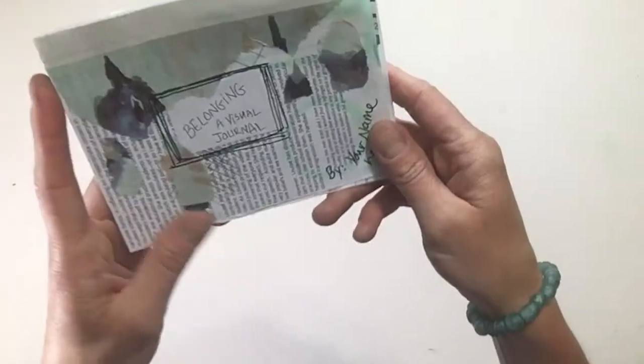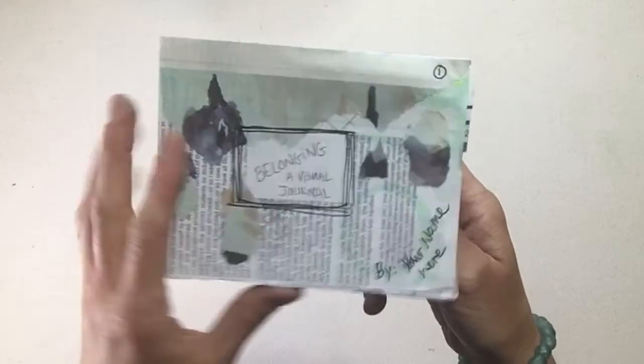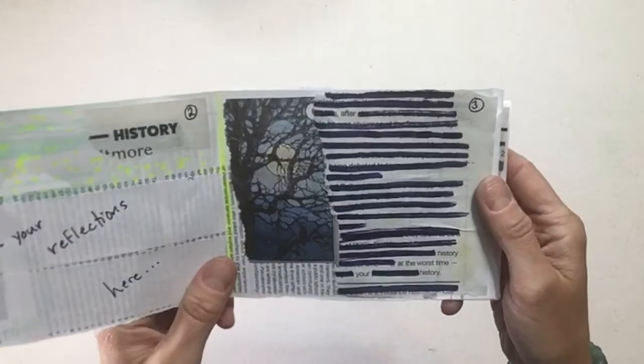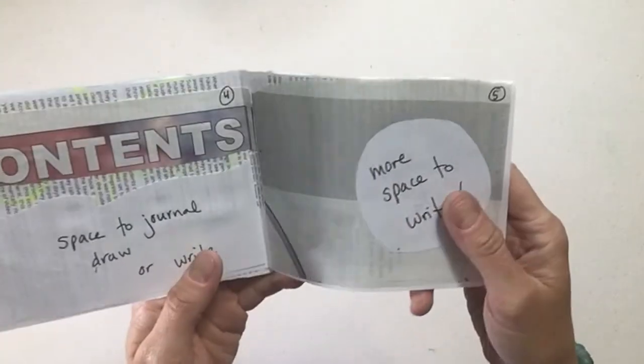Ta-da! Here is a prepared visual journal ready for deep reflection and reckoning on the themes from Nora Krug's book, Belonging. I can write notes, stories, letters, poems, and more to begin adding content to my pages.